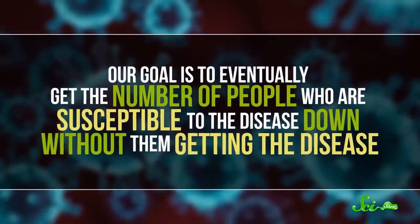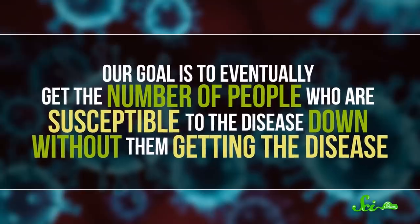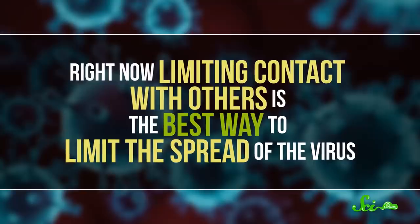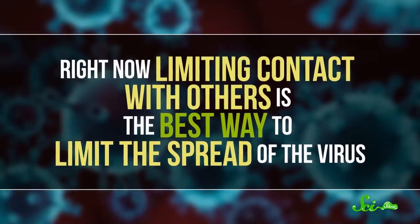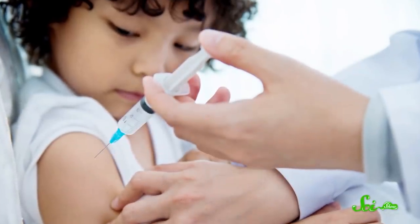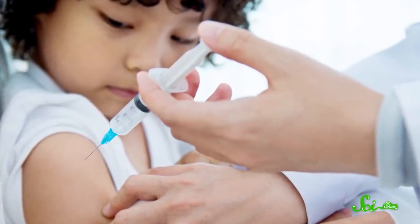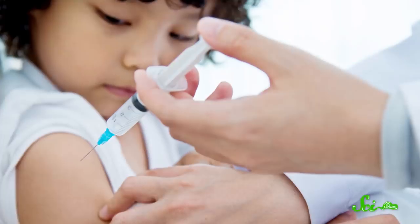Our goal is to eventually get the number of people who are susceptible to the disease down without them getting the disease. Right now, limiting contact with others is the best way to limit the spread of the virus. And if we're lucky, that will buy researchers enough time to develop a vaccine. And that is how we decrease the number of people who are susceptible, by making them immune.